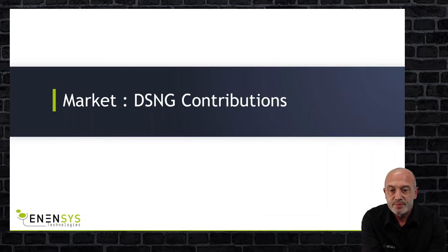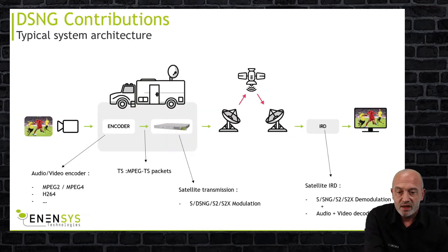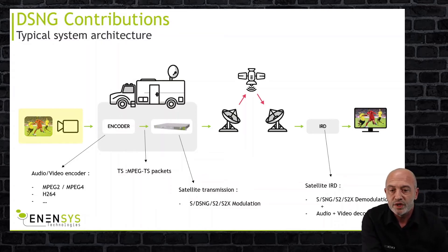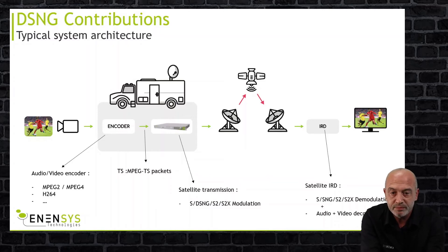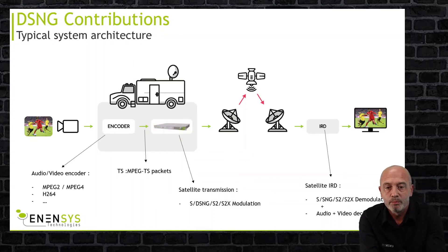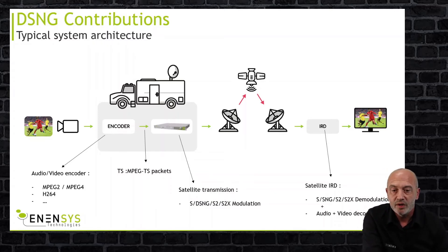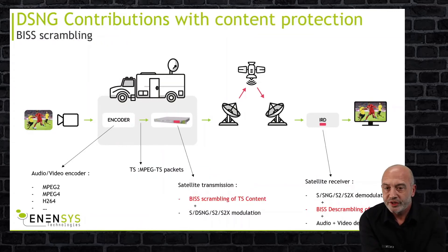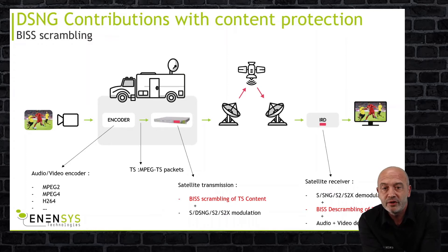Let's look at how it works on the field, especially in the DSNG contribution and satellite contribution. Here is a simplified but typical DSNG system architecture. You've got the video camera taking the picture of the event, the encoder making the video compression — MPEG-2, MPEG-4 and so on. It provides the compressed video as a transport stream over ASI or over IP to the satellite modulator for satellite transmission. On the receiver side, people typically use compact solutions called IRDs — integrated receiver decoders — composed of a satellite demodulator and an audio and video decoder. That's a system unprotected against hacking.